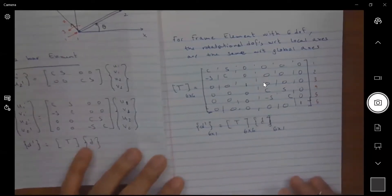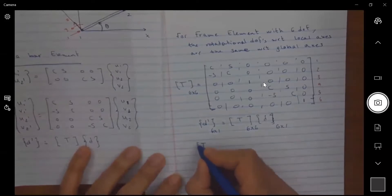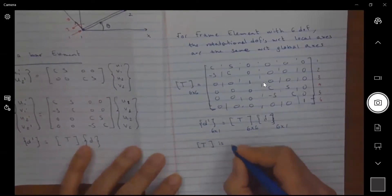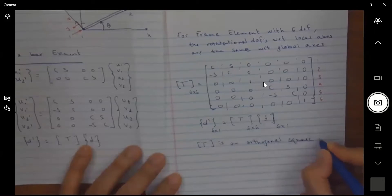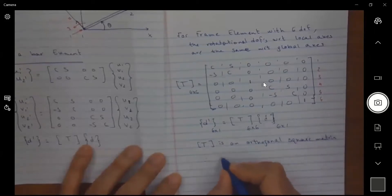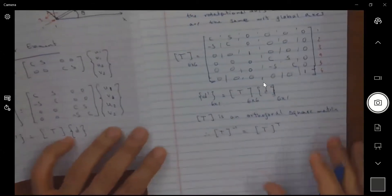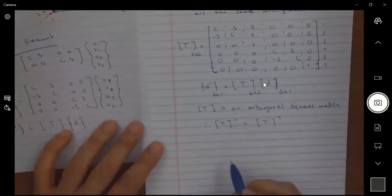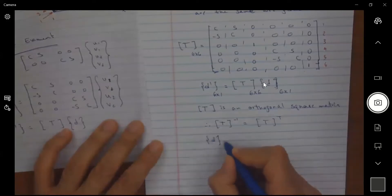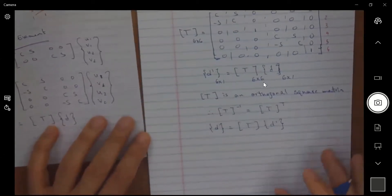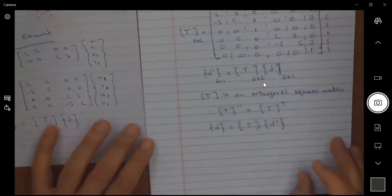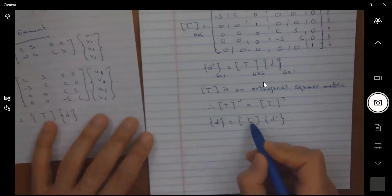Well now this d prime is a six by one, this is a six by one, and this transformation matrix is a six by six. Please remember that T is an orthogonal square matrix, therefore the inverse of T is equal to T transpose.